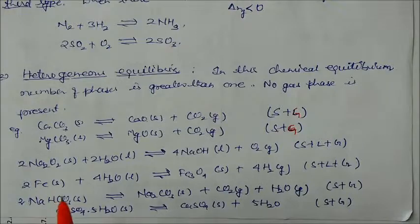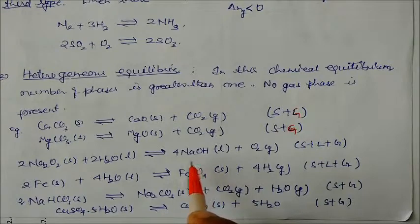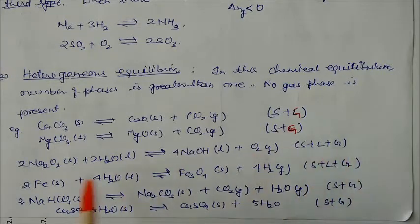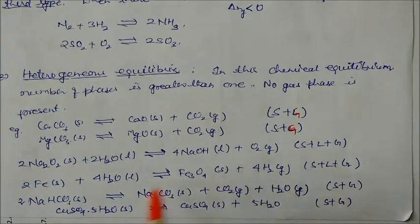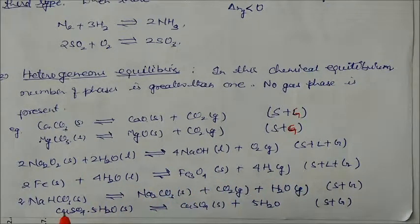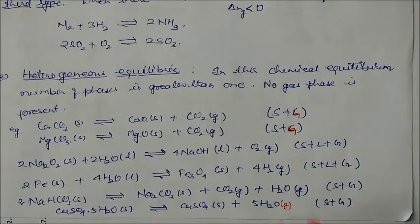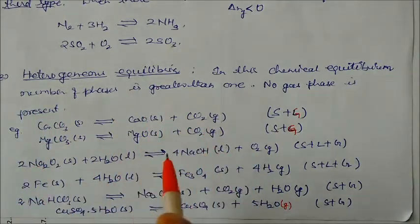Sodium peroxide reacting with water gives sodium hydroxide plus oxygen — so we get solid, liquid, and gas phases. Iron reacting with water gives Fe₃O₄ — again solid and liquid, so three phases are present. Similarly, sodium bicarbonate shows solid plus gas phase, and copper sulfate (blue vitriol) gives two phases: solid and gas. These are the heterogeneous equilibria with multiple phases present.